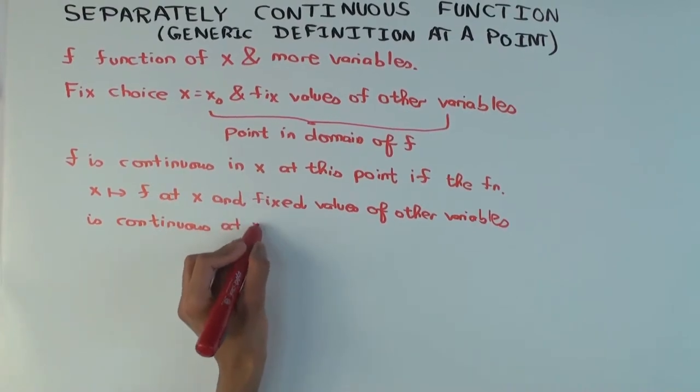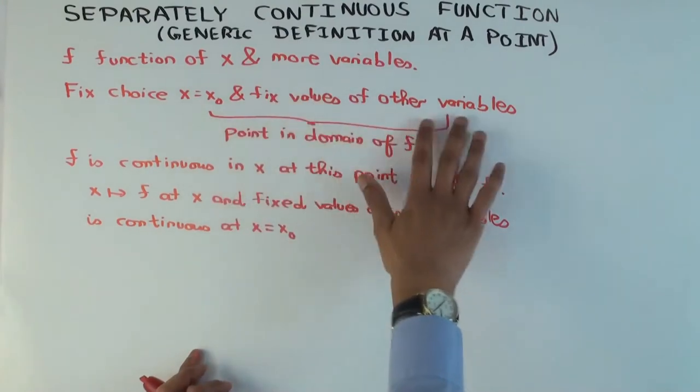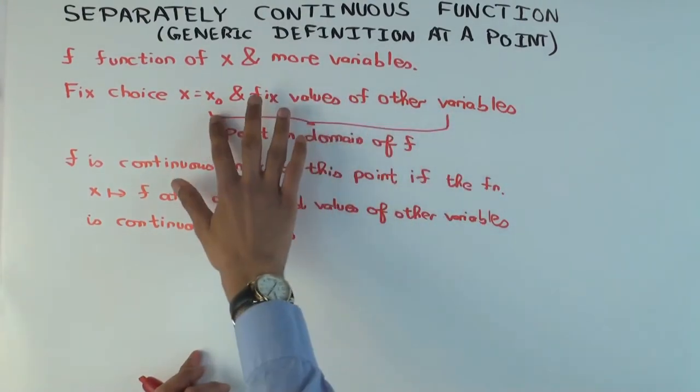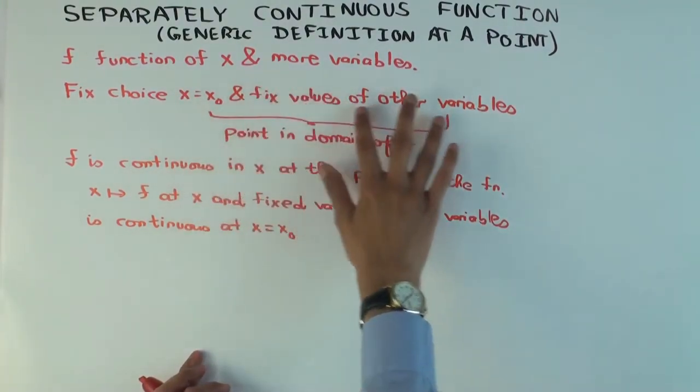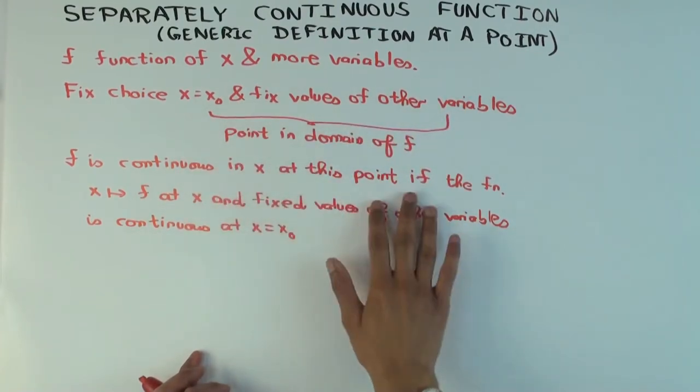So intuitively, what's happening is the following. I'm saying that this is a function of many variables. I'm now looking at a particular point. So I fixed the x value, and I fixed the values of the other variables. And I want to say the function is continuous at this point.